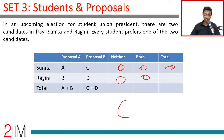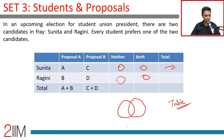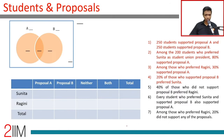One of these data sets is in the set theory framework, and the other is in a nice table framework. Keep that distinction in mind because it is going to be very crucial. Now let's go to the data points: 250 students supported proposal A, 250 supported proposal B.